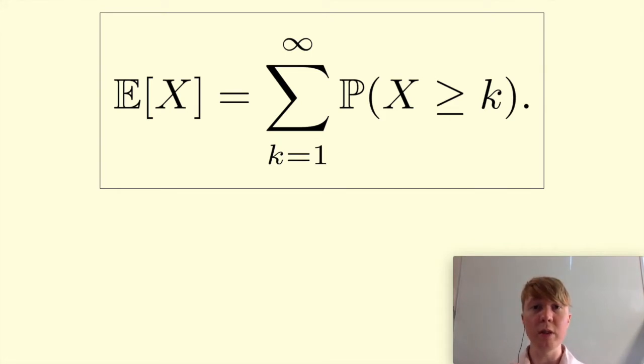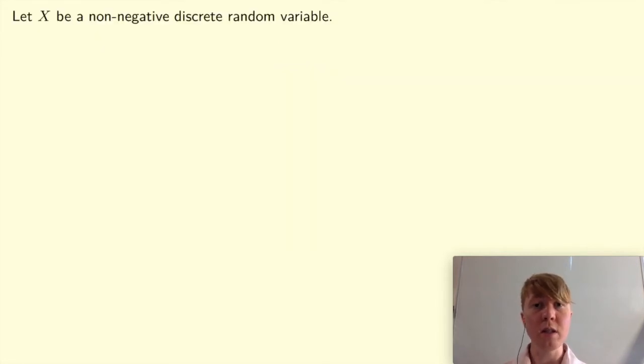So we'll have a look at the proof, and this just relies on one little trick, where we start off with the definition of the expectation, you write this as a double sum, and then when you change the order of summation, out comes the formula. Okay, so let's get started.